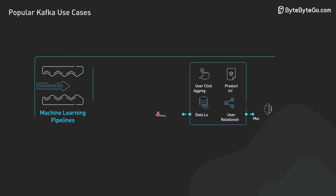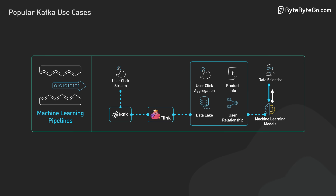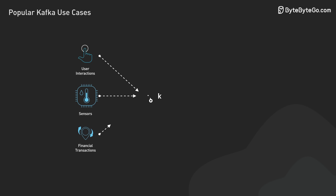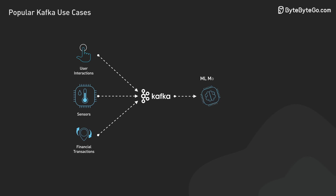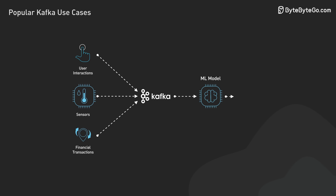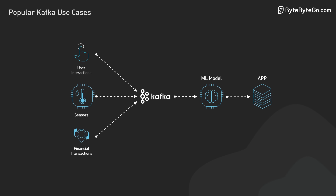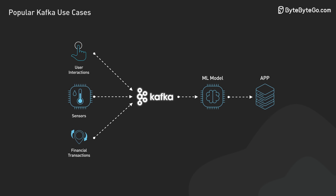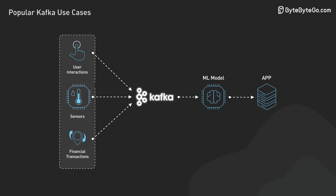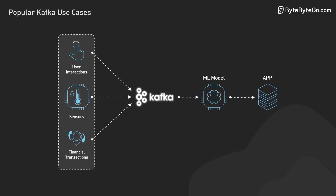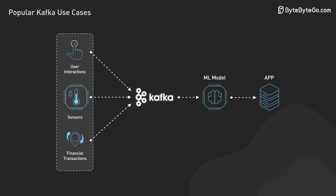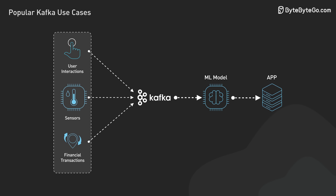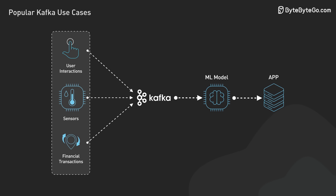The second use case is real-time machine learning pipelines. Modern ML systems need to process vast amounts of data quickly and continuously. Kafka's stream processing capabilities make it a perfect fit for this. Kafka acts as the central nervous system for ML pipelines, ingesting data from various sources — this could be user interactions, IoT devices, or financial transactions.